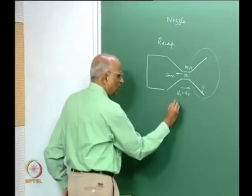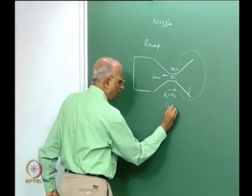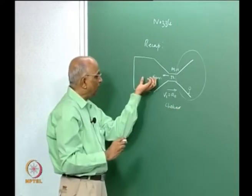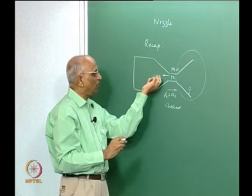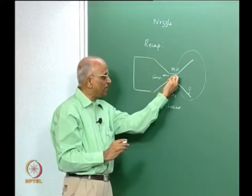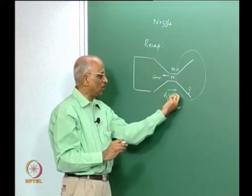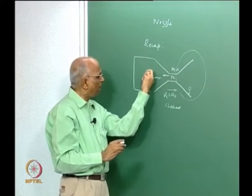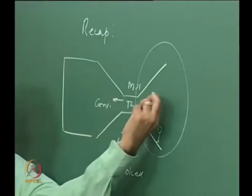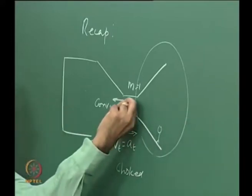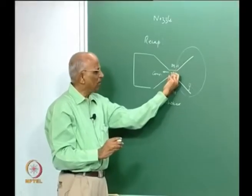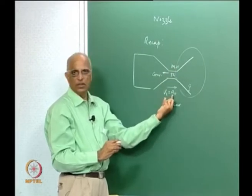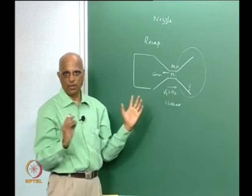Second thing: the throat is choked. In other words, for the given mass flow rate, I can have a maximum velocity which corresponds to sound speed at the throat. If I have a higher pressure or if I suck it at a lower pressure, I cannot exceed this condition. That means the throat always will have Mach number equal to 1, or the velocity here should be the sound speed.